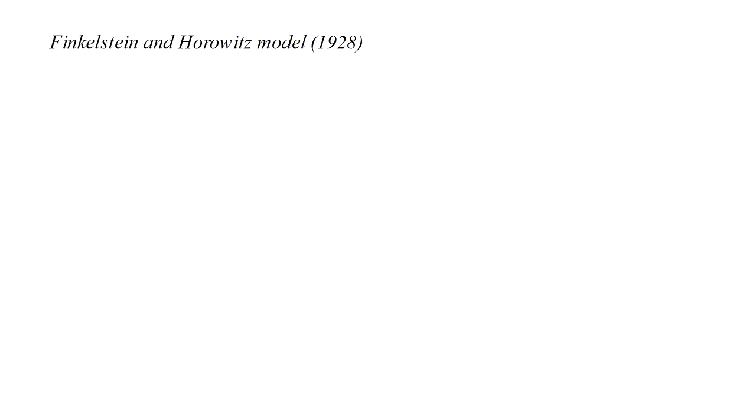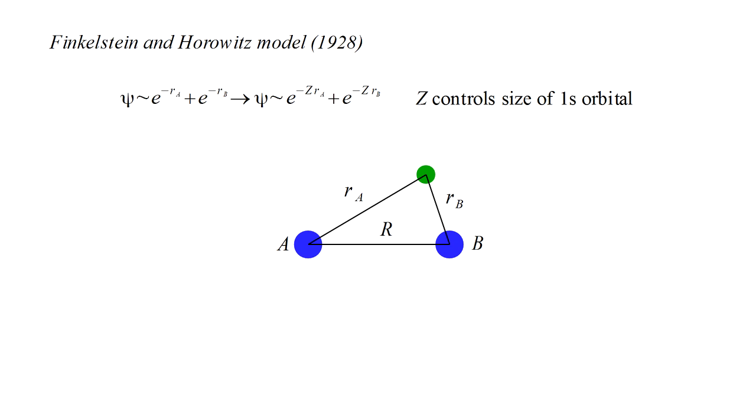In 1928, Finkelstein and Horowitz used this idea to improve the linear combination of 1s atomic orbitals model we have looked at so far in this video. That molecular orbital is e^(-rₐ) + e^(-rᵦ), where rₐ and rᵦ are the distances from the electron to protons a and b.